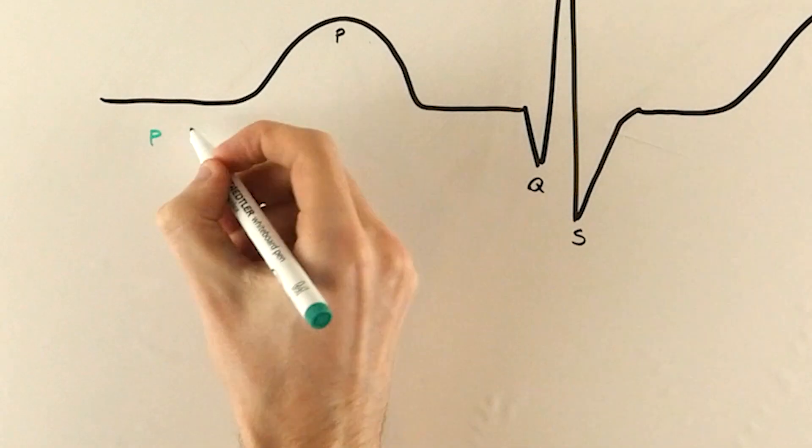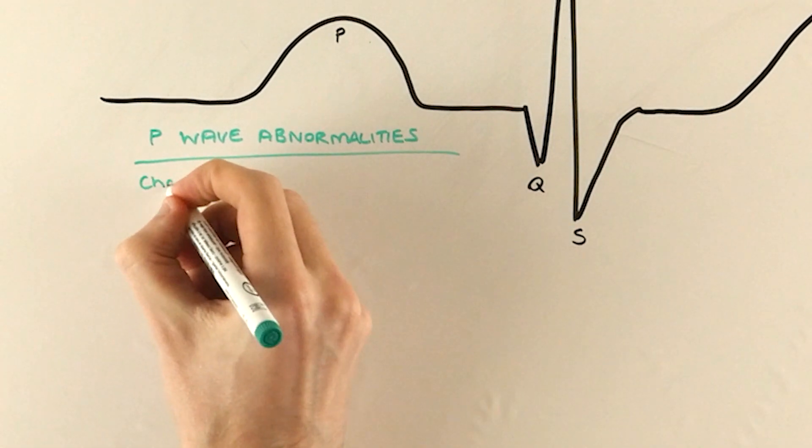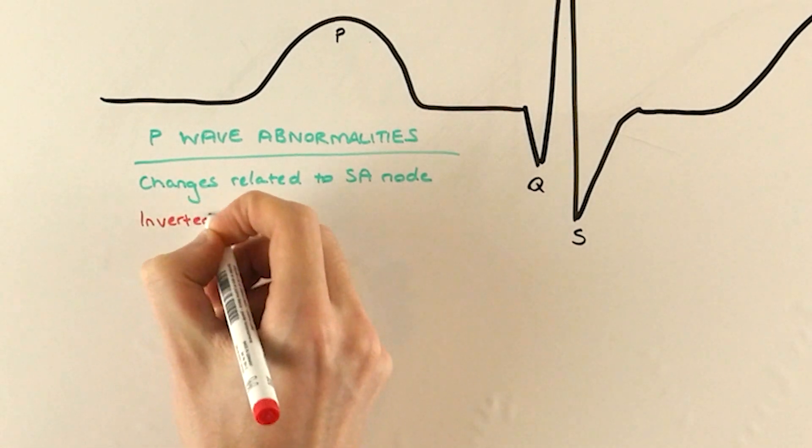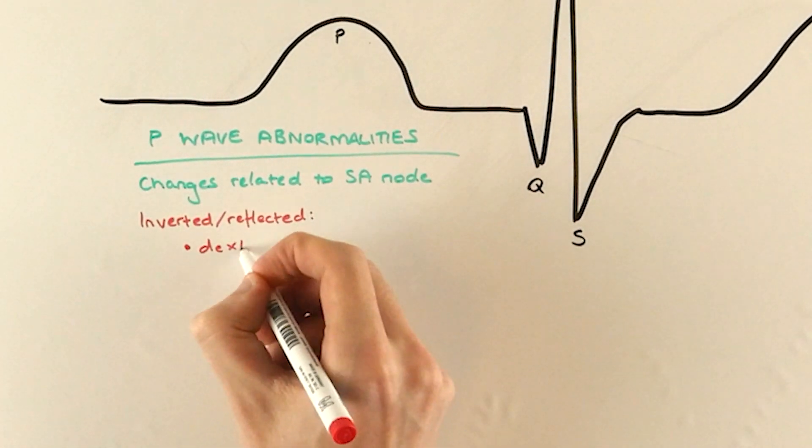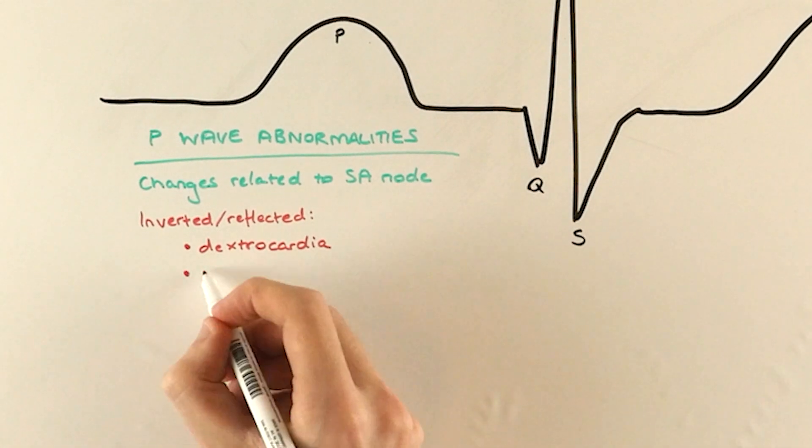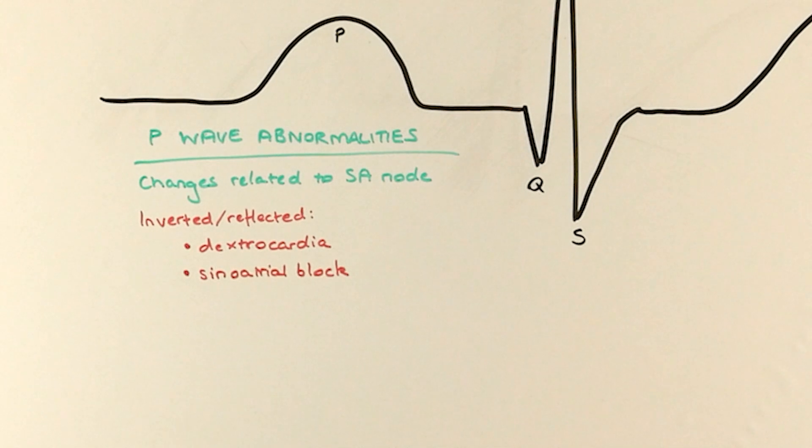So now for the clinical stuff. Returning to our P wave, any abnormal changes tend to be related to the sinoatrial node. If it's inverted and reflected upside down, this could mean that the heart is actually facing the other way, from right to left, in a condition called dextrocardia, and therefore depolarization is happening in a different direction.